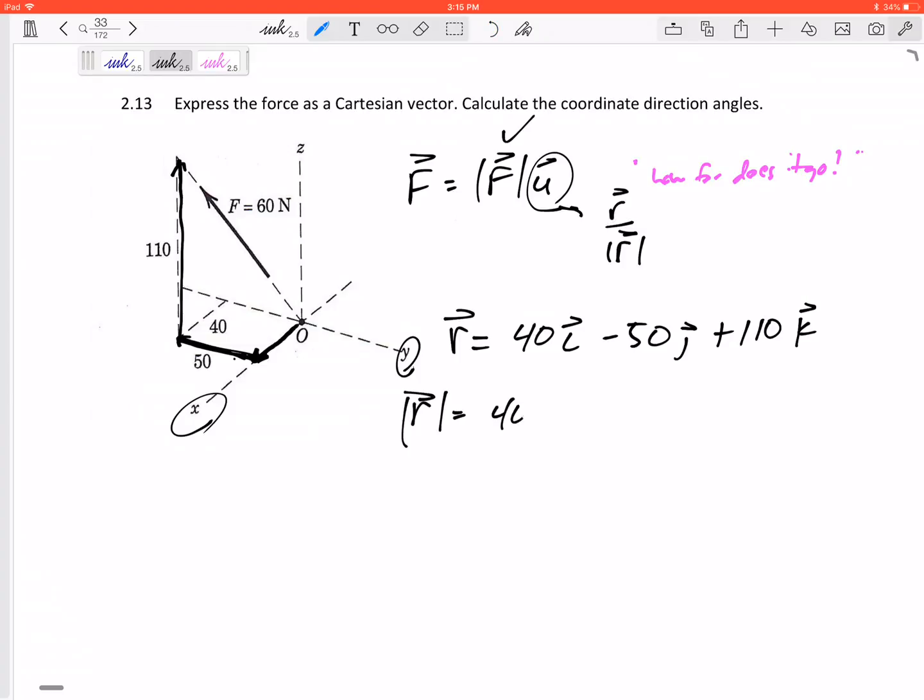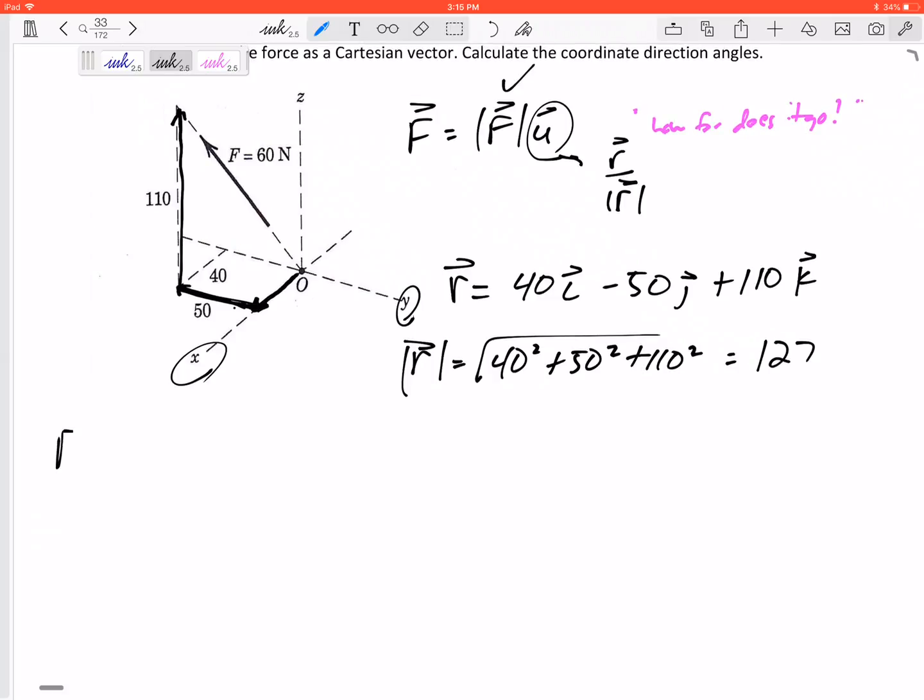We need to square 40 squared, 50 squared, 110 squared, take square roots. Like find the hypotenuse. A squared plus B squared equals, but this is A squared plus B squared plus C squared equals D squared, so don't forget to take that square root. I've got 127.